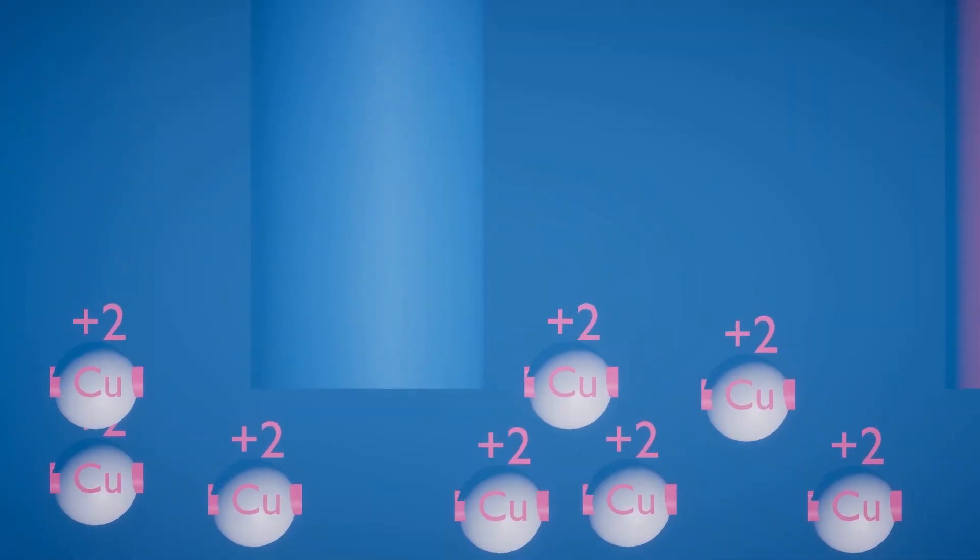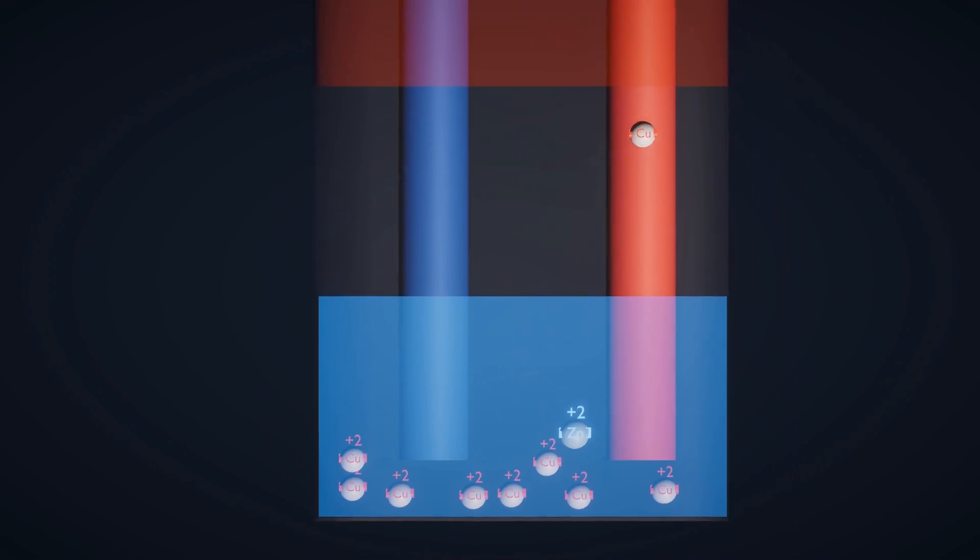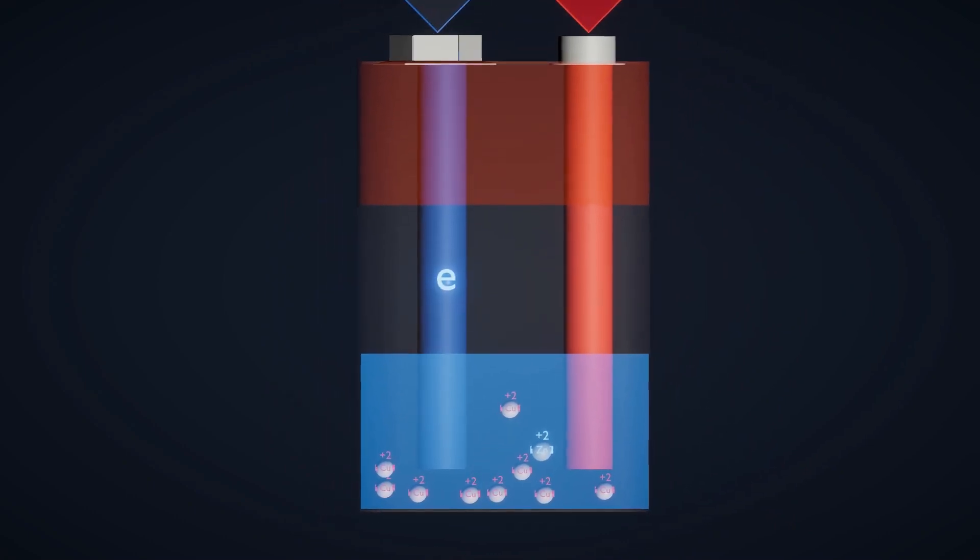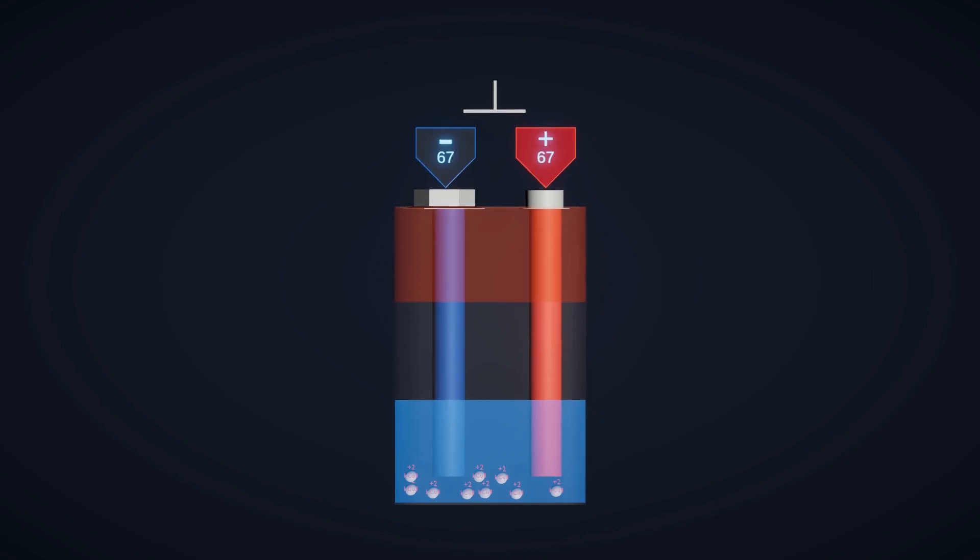In previous classes, we learned that a battery produces energy through chemical reactions, and charge is stored in the form of potential difference across its terminals, known as electromotive force, EMF.